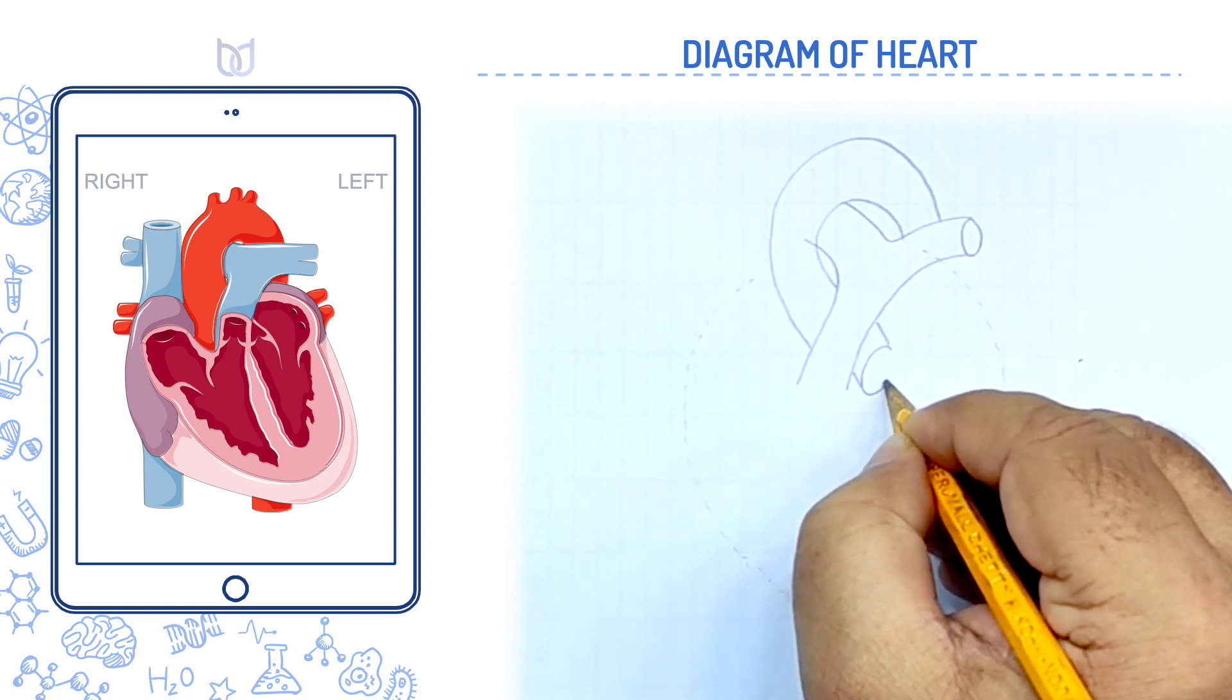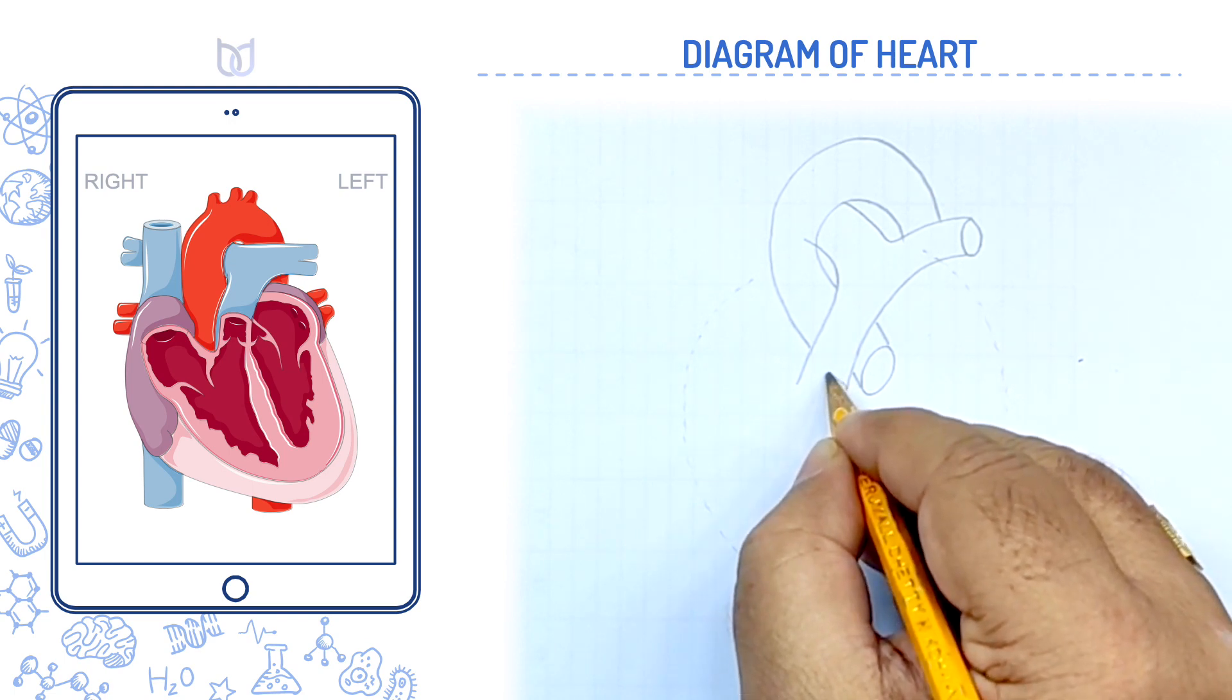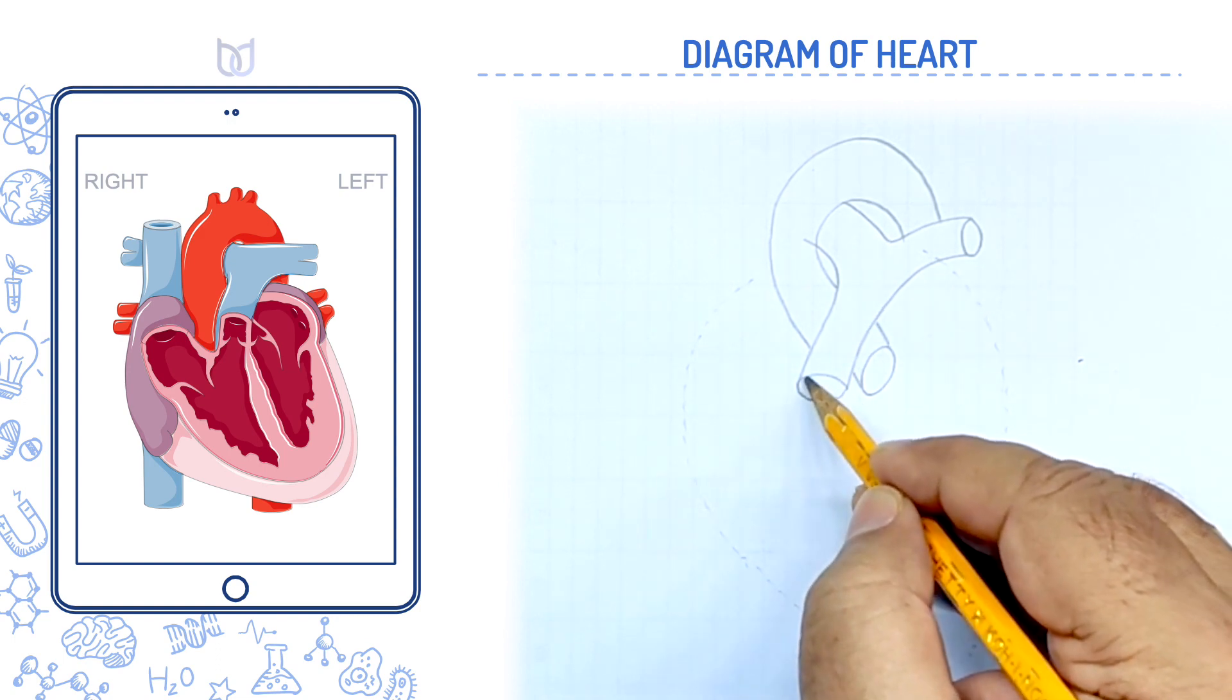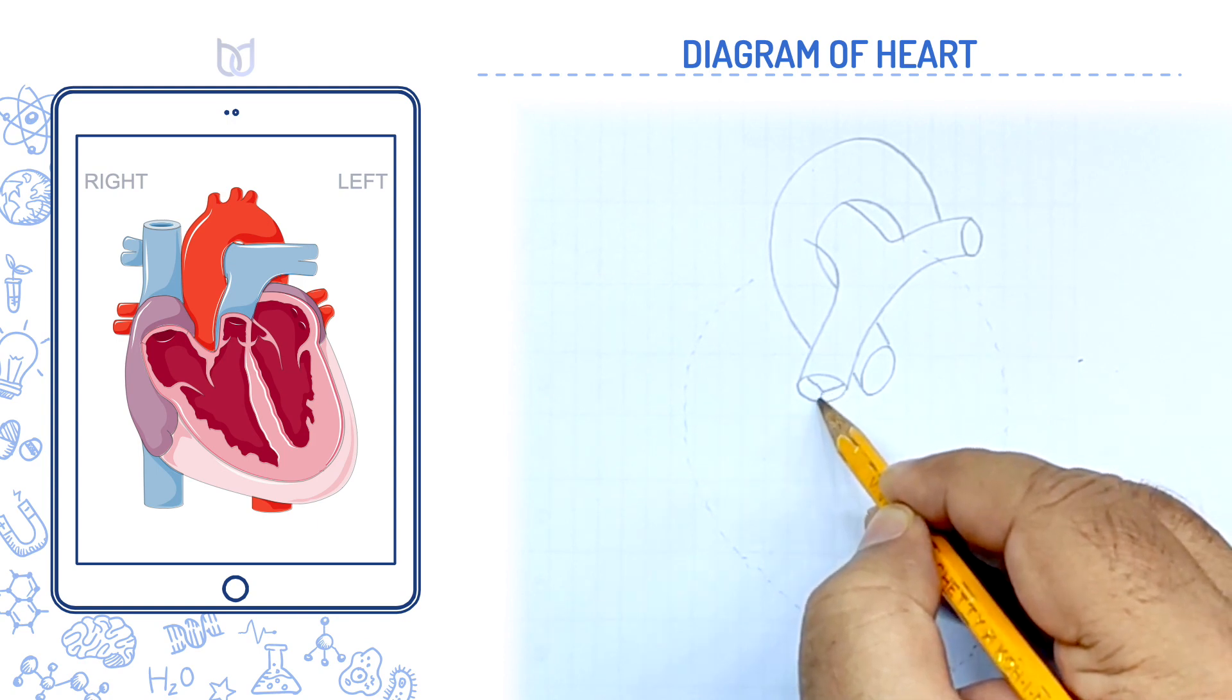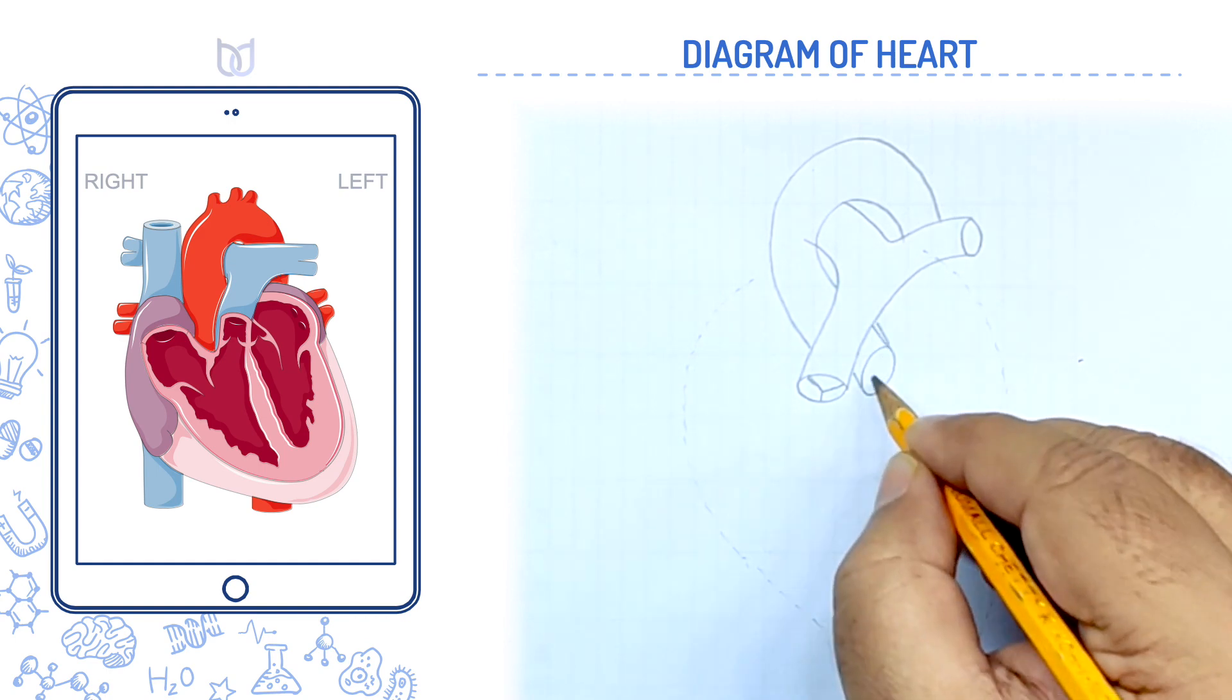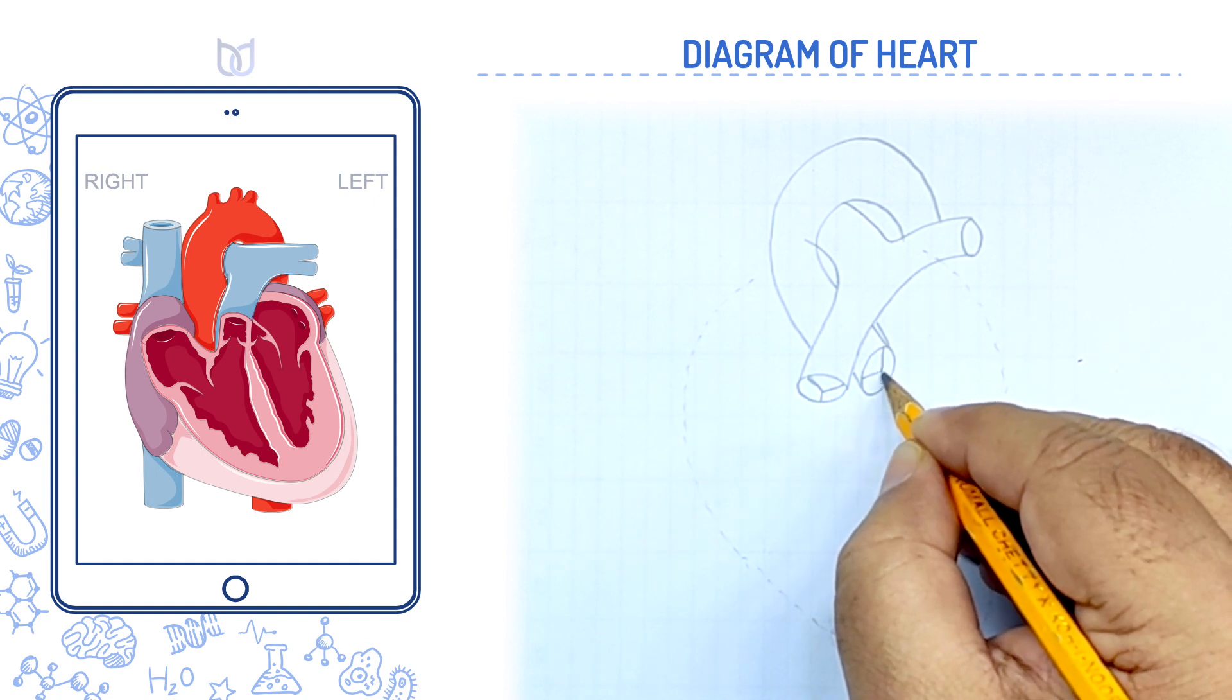At the base of each aorta, we see the set of three semilunar valves. From the right side, remember this one pulmonary aorta and the valve present at its base called pulmonary valve. This one systemic aorta, the valve present at its base called aortic valve or systemic valve.